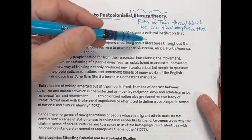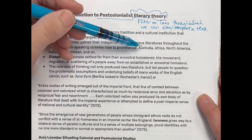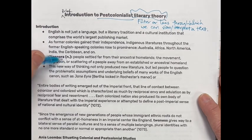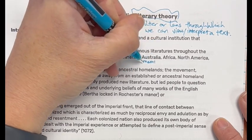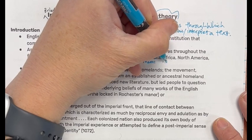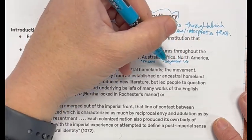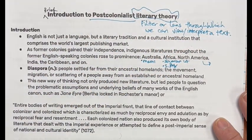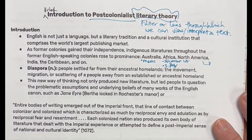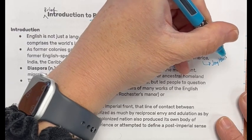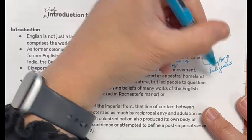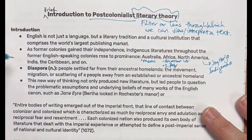As former colonies gained their independence, indigenous literatures throughout the former English-speaking colonies rose to prominence — such as in Australia, Africa, North America, India, the Caribbean, and so on. For example, Māori literature in Australia, Nigerian lit as a whole movement unto itself, and someone like Joy Harjo, who we could say is a post-colonialist poet of the indigenous North American tradition. Joy Harjo and other indigenous creators from various tribes and groups represent this movement.